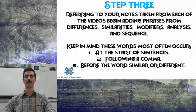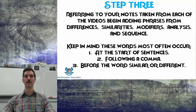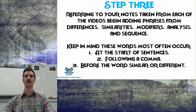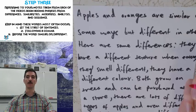For step three, refer to your notes taken from each of the videos — you should have a list of each category written somewhere easily accessible, preferably open to a different page for each one. You'll need to be looking for differences, similarities, modifiers, analysis, and sequence. You might want to do these in whatever order makes sense to you — maybe start with differences and similarities, or sequences, which is the easiest of all, followed by modifiers, and then lastly analysis. Keep in mind these words and phrases will most likely be placed at the start of sentences, following a comma, or before the word 'similar' or 'different' in the case of modifiers.